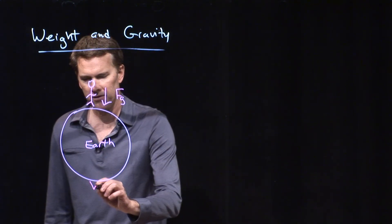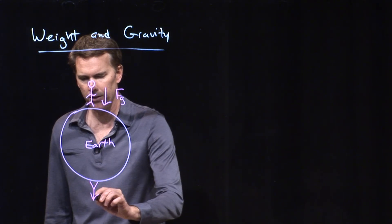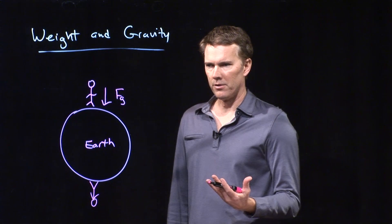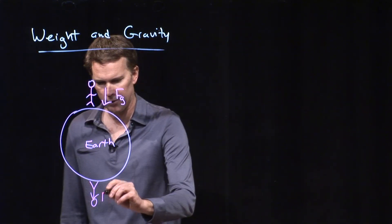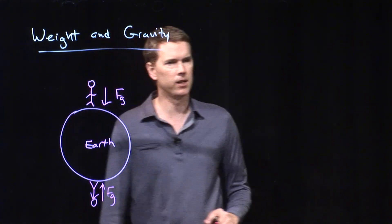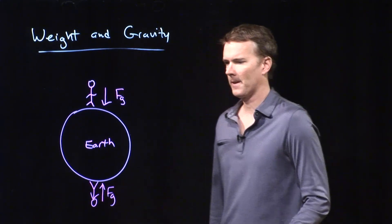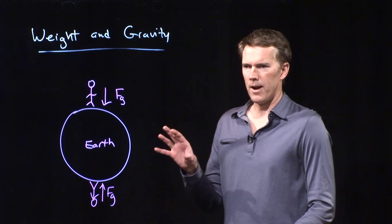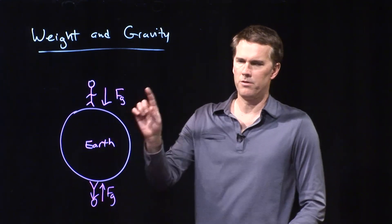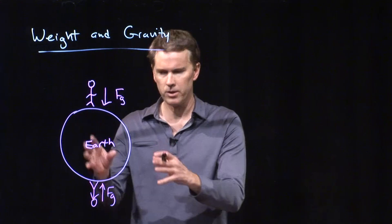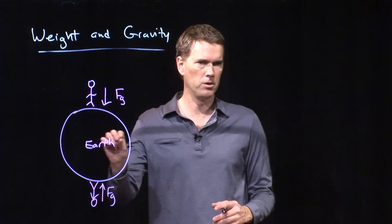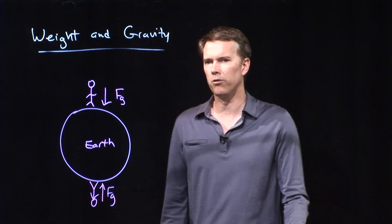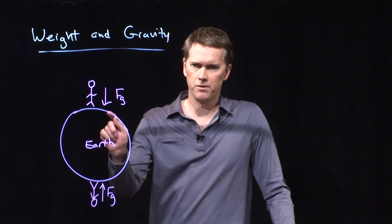Now let's say somebody else standing on the other side of the earth also experiences a force F sub G, but of course that F sub G is pointing upwards. This is the way gravity works — it always points towards the center of the earth. So if you're on the moon, it's going to point towards the center of the moon. If you're on Mercury, it's going to point towards the center of Mercury. The force is always acting towards the central point.